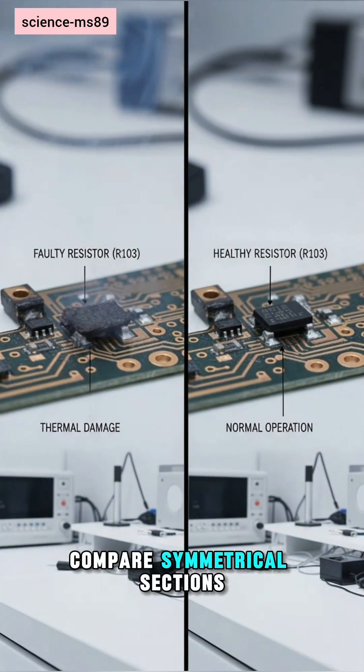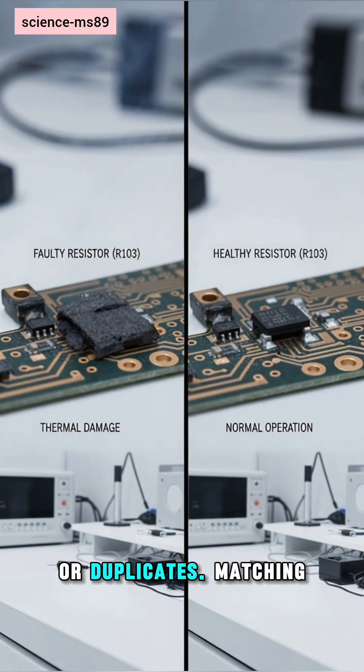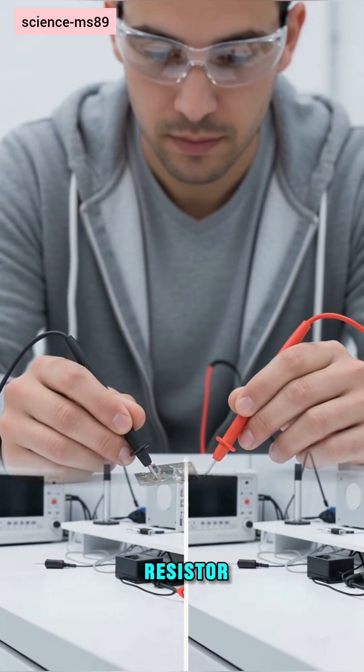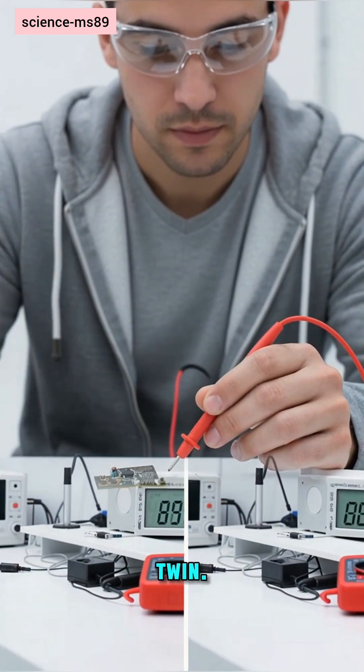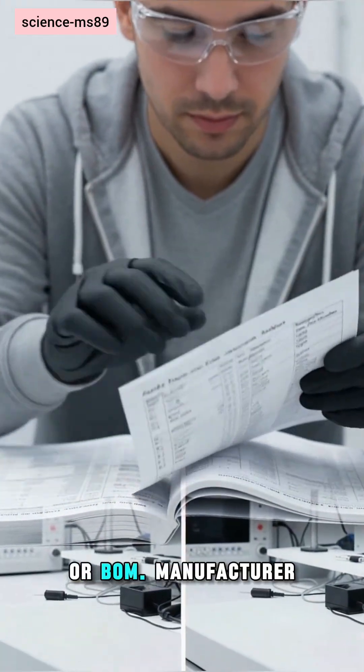Compare symmetrical sections or duplicates. Matching channels often share resistor values. Measure the intact twin, consult the service manual or BOM.